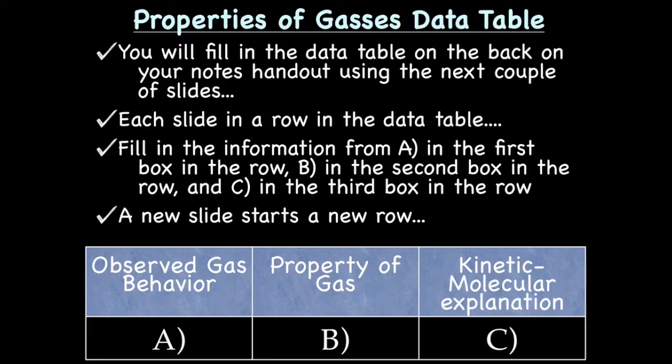For this lecture, you need to find your data table handout and fill it out as you go through the lecture. Each slide is a row in the data table. In each slide you'll have parts A, B, and C: part A is the observed gas behavior, part B is the property of the gas, and part C is the kinetic molecular explanation. Once we move to a new slide, move to a new row on your data table.